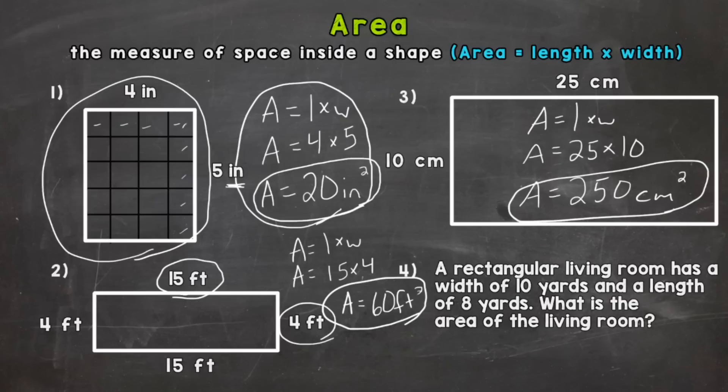So for number four we have a word problem where we're going to need to calculate area. A rectangular living room has a width of 10 yards and a length of 8 yards. What is the area of the living room?